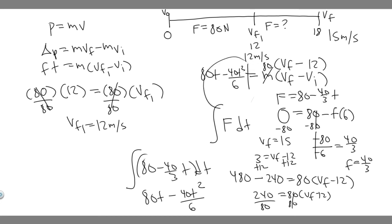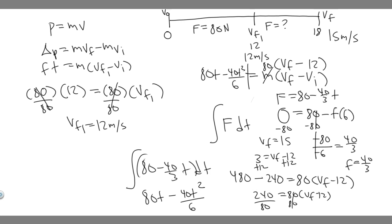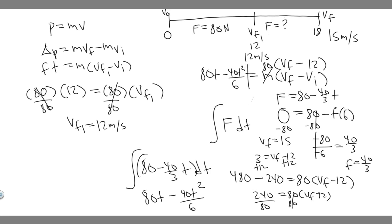Essentially, we had to take into account that the first interval had a constant force while the second didn't, so we had to make sure the second part was integrated. After 18 seconds, the final speed is 15 meters per second — and that's your answer.